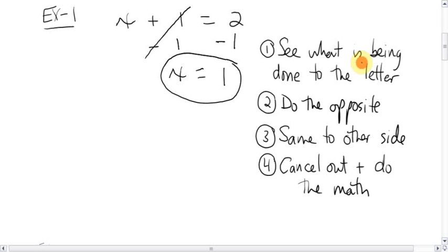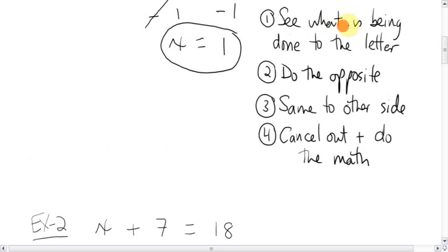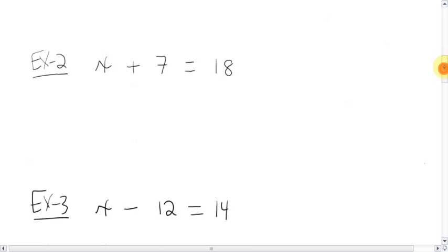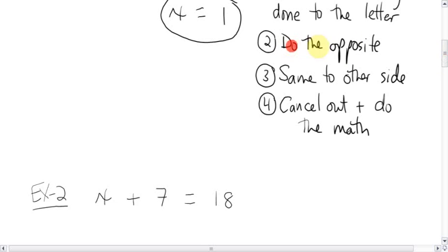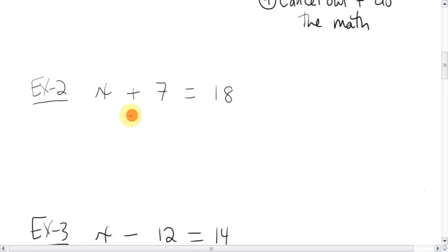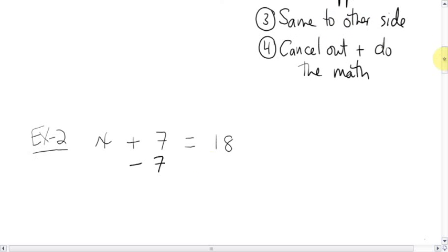Let's see if we can use those 4 steps for the next problem. x plus 7 equals 18. And I want a lot of you to know the answer already. I don't care about the answer. I want you to get used to the method. First, see what's being done to the letter. Then do the opposite. Same to the other side. And then cancel out and do the math. So, what's being done to the letter here? The letter is being added by 7. Next step, do the opposite. The opposite of adding 7 is subtracting 7.